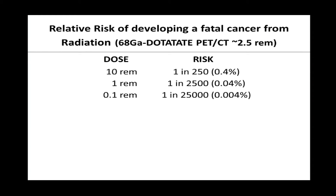To put things into perspective: a dotatate PET-CT delivers about 2.5 rem. Rem is a measurement of radioactivity the body is exposed to. Risk models based on a linear non-threshold model — derived from observations of atomic bomb survivors in Japan during World War II — calculated that a dose of 0.1 rem carries a risk of about 0.004 percent. Even with a dose of 10 rem, the relative risk of developing cancer from radiation is only 0.4 percent.